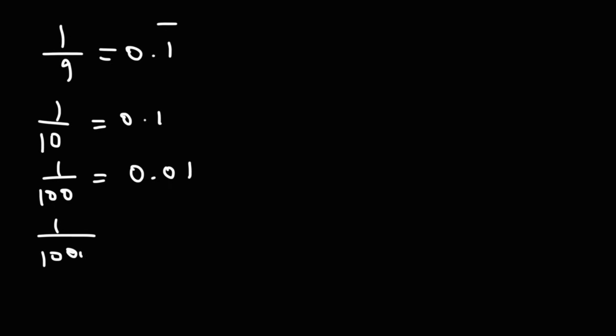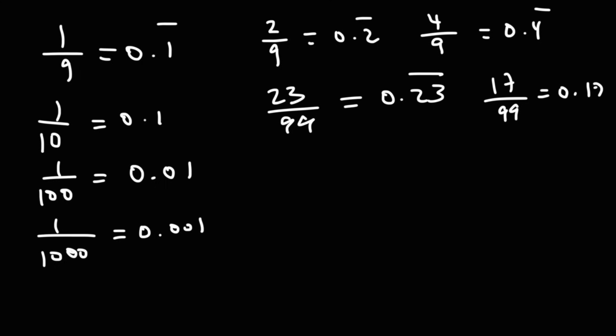And 2 over 9 will be 0.2 repeating. 4 over 9 will be 0.4 repeating. 23 over 99 will be 0.23 repeating. 17 over 99 will be 0.17 repeating. 247 over 999 will be 0.247 repeating. So there's a pattern when you're dealing with the nines.